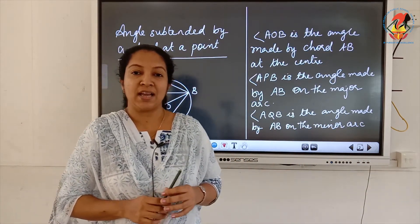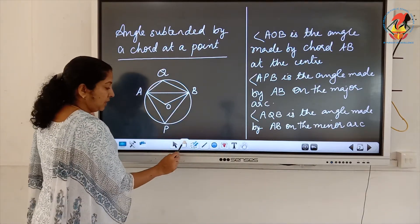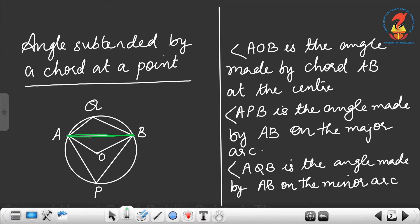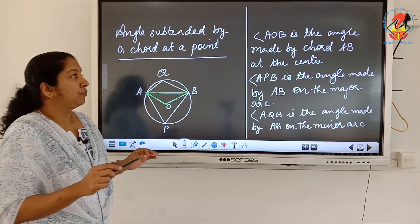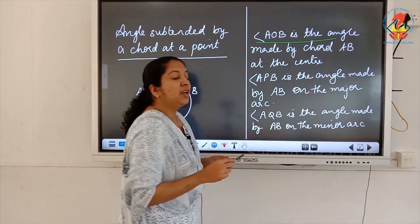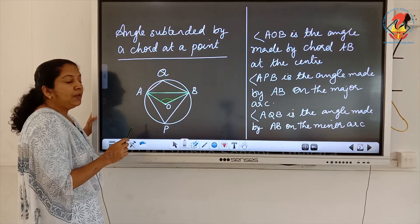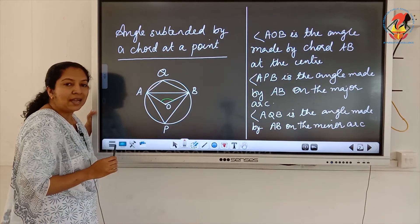Consider a chord AB. This is the center of the circle. The angle made by this chord AB at the center O is angle AOB — that is the angle made by chord AB at the center.